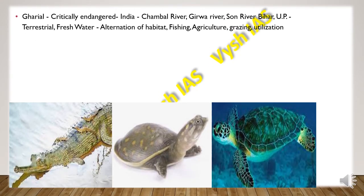Then we have the Gharial, which is critically endangered. It is found in India specifically in the Chambal River, Girwa River, and Son River in Bihar and also in Uttar Pradesh. It lives in freshwater bodies as well as on land. The main threats it faces are alteration of habitat, fishing, agriculture, grazing, and overutilization.